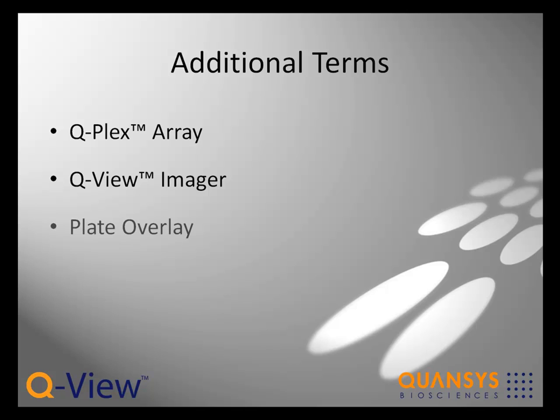Plate overlay refers to the diagram of the plate that is aligned by the user over the plate image. Product code is the alphanumeric code that defines parameters such as the number of spots per well and their positions, the concentrations of each analyte in the calibrator, and the optimal curve fit settings.